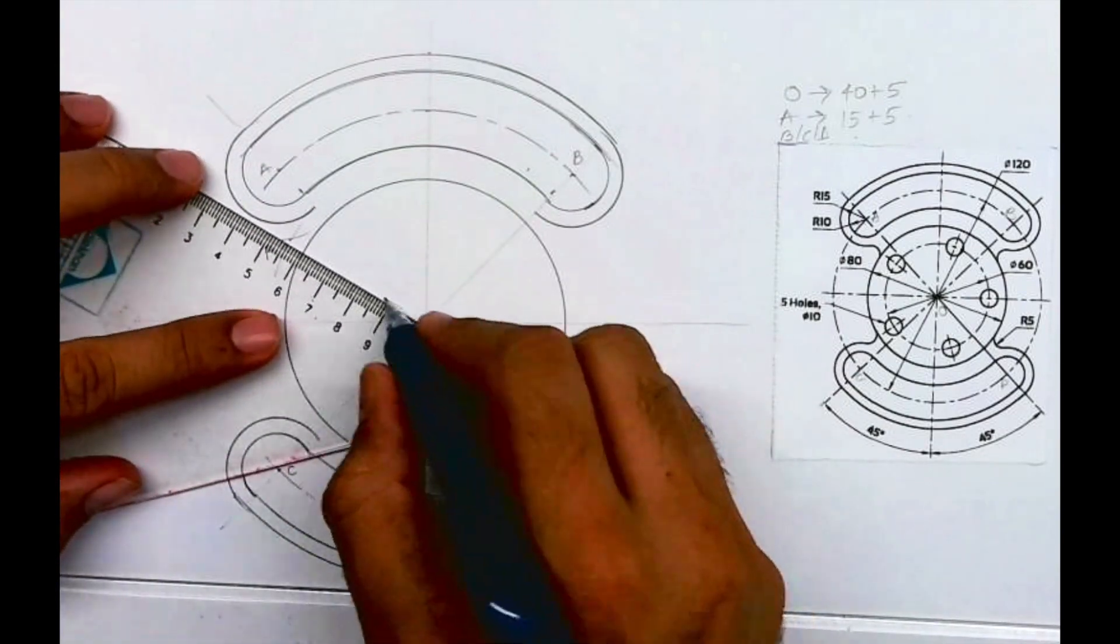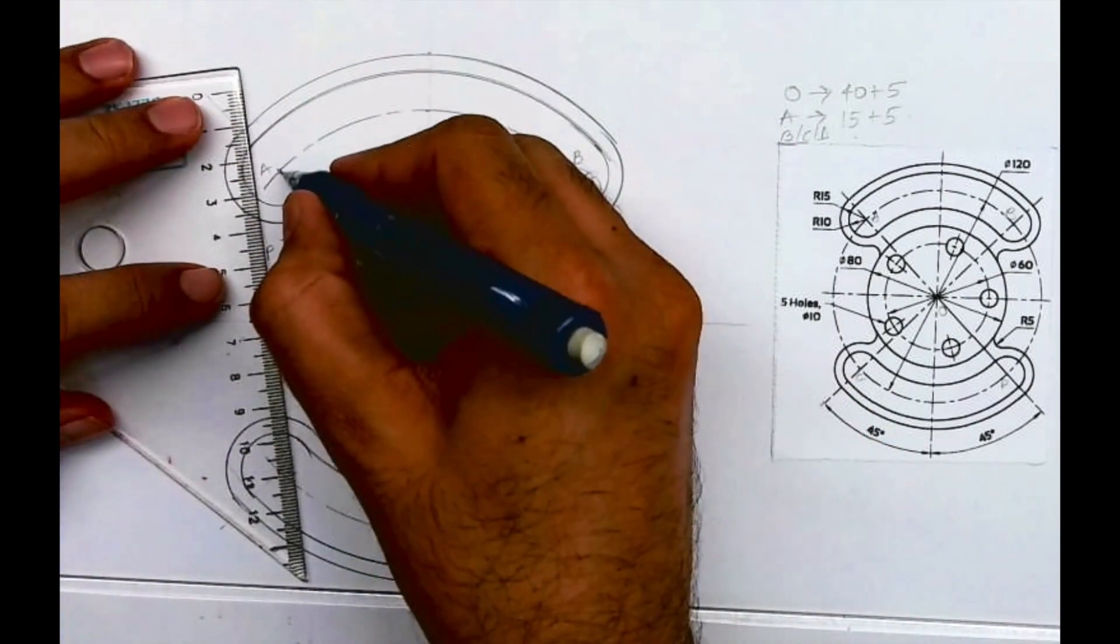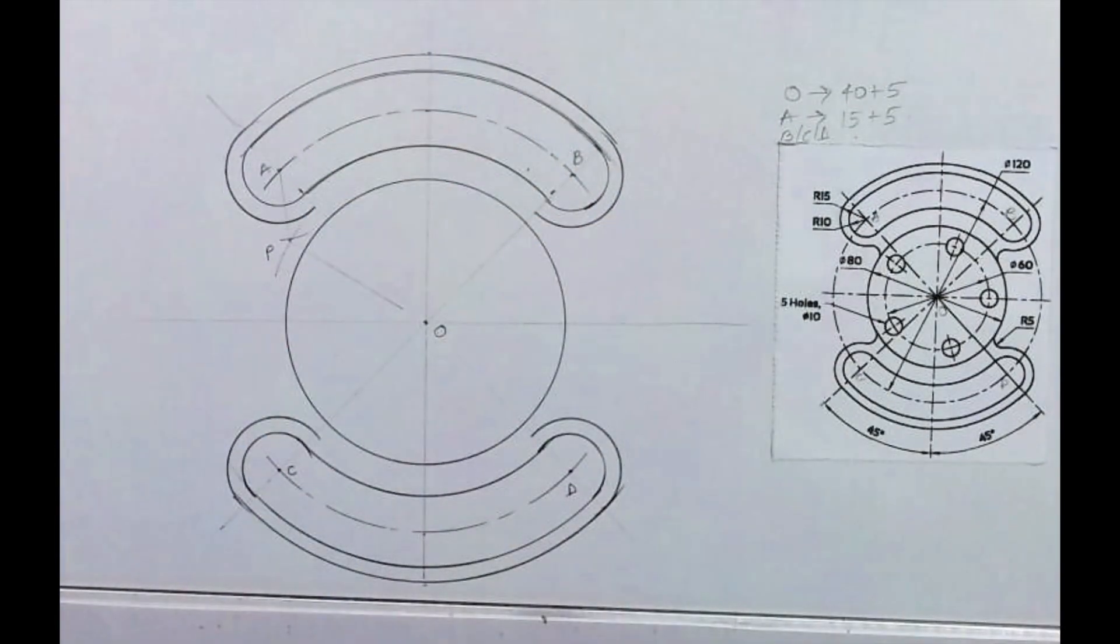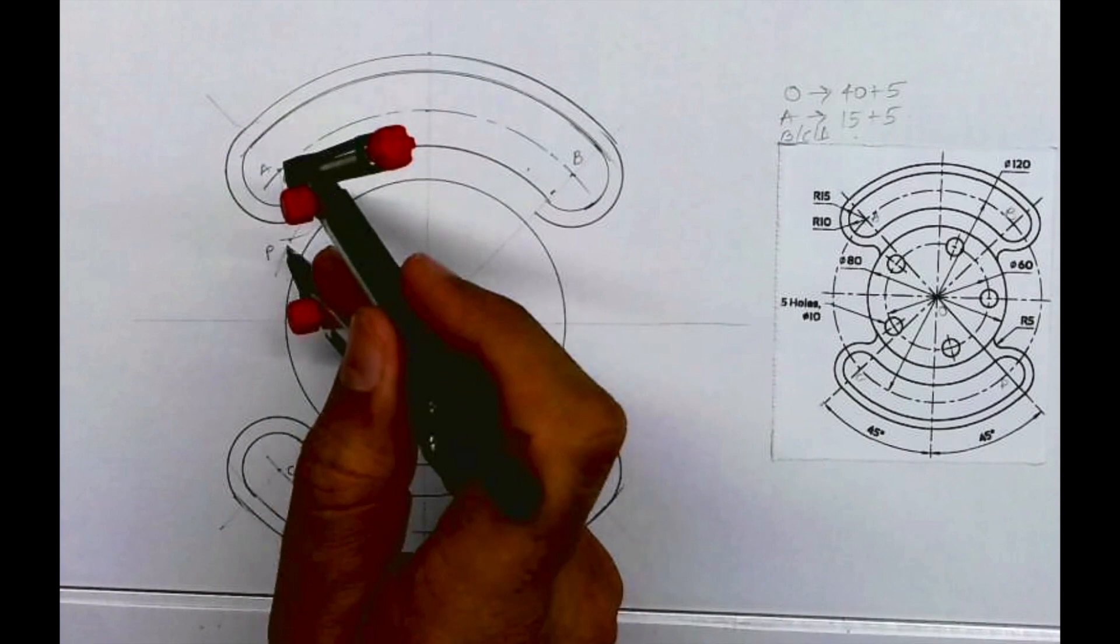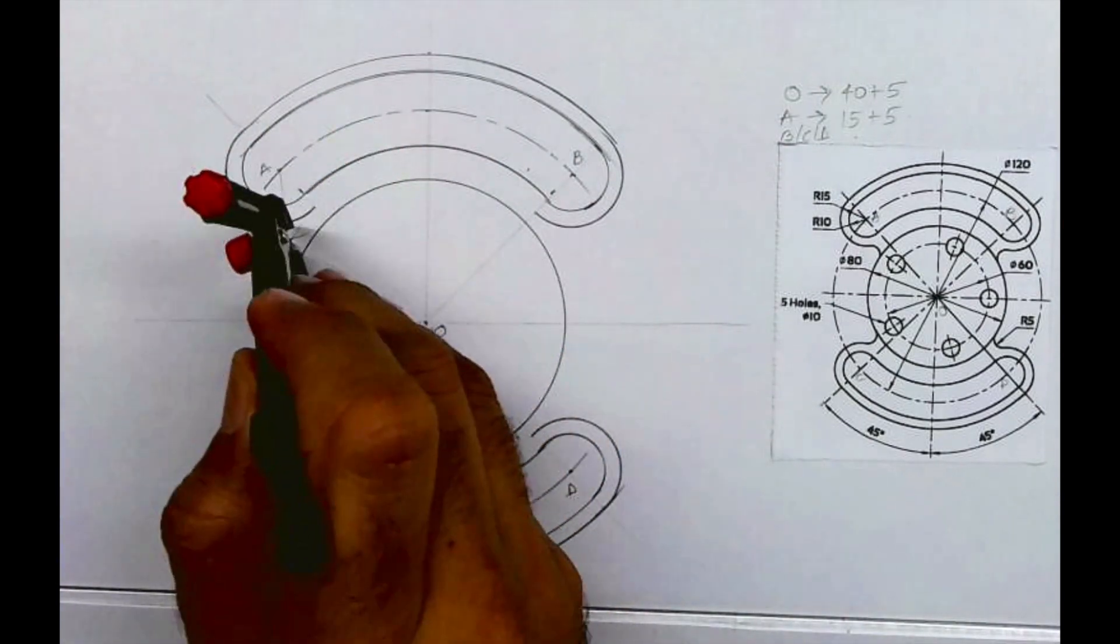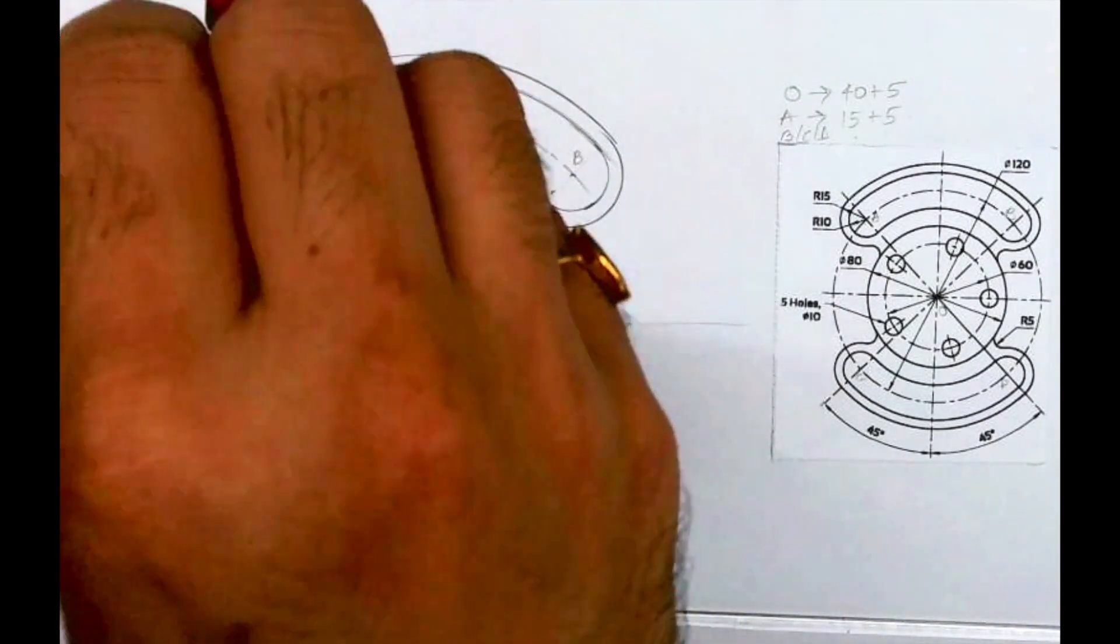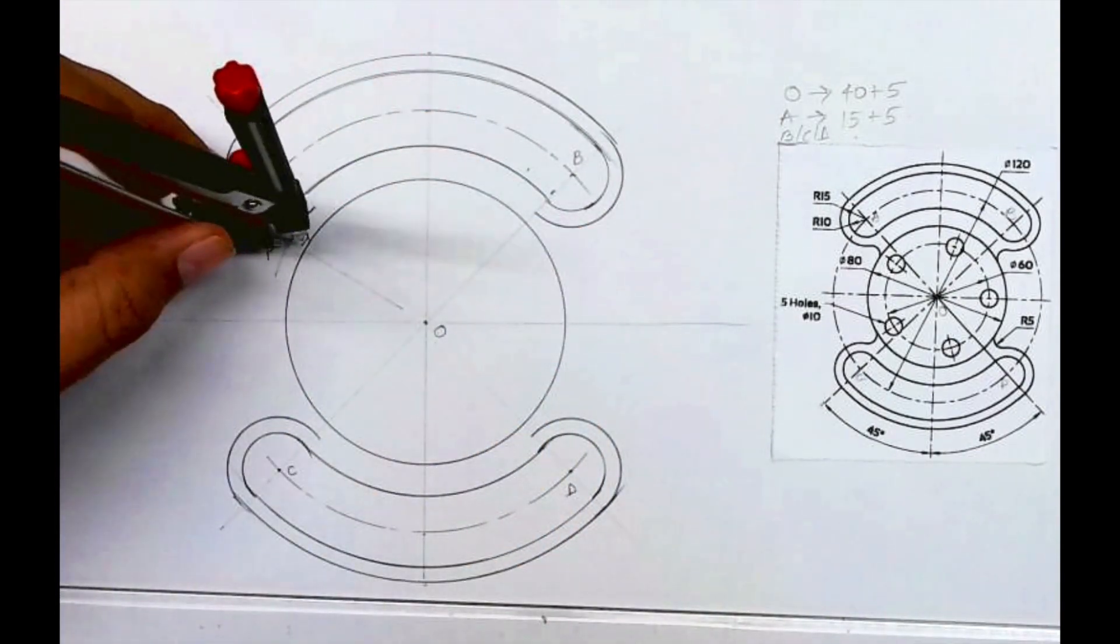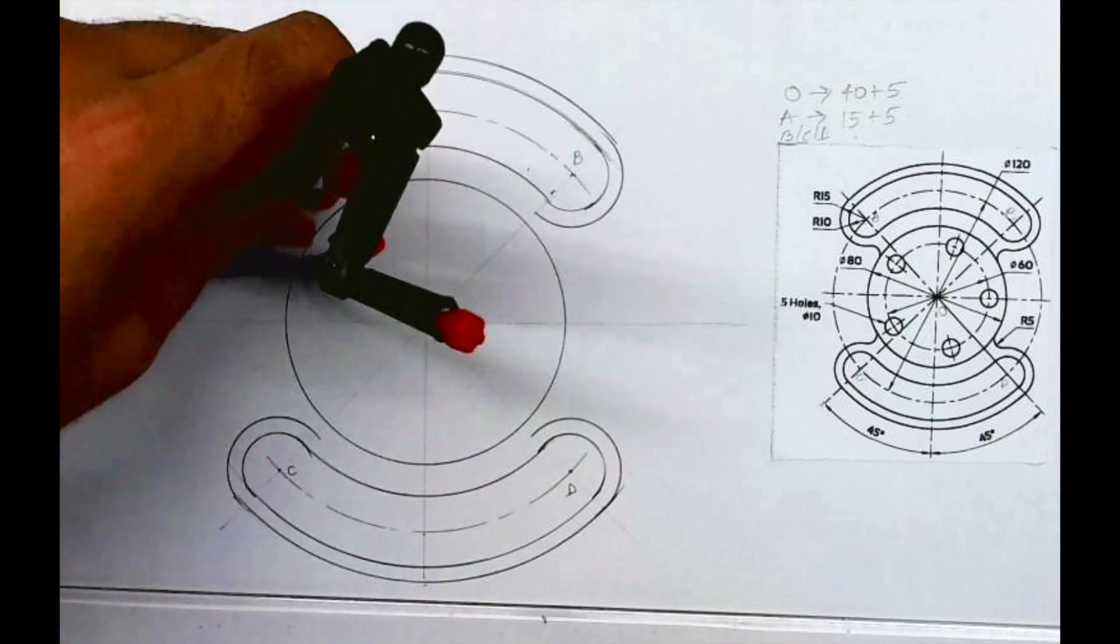You can join O to P and A to P to get the accurate point of the curve, or you can take directly radius 5, or you can use pro circle also. Since it's a very small radius, at times it becomes very difficult to draw, so you can use pro circle. That's why those lines will be very helpful.